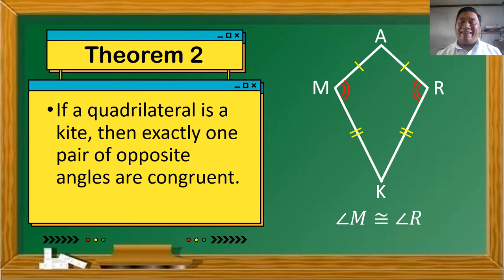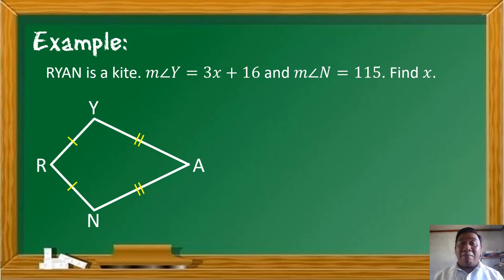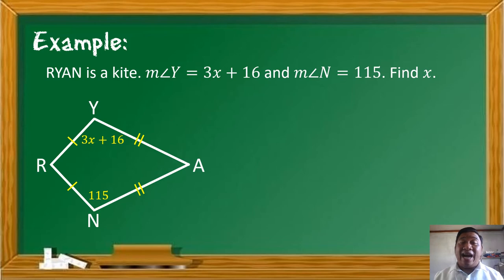Let's have an example. Quadrilateral R-Y-A-N is a kite. The measure of angle Y is equal to 3X plus 16, and the measure of angle N is equal to 115. Find the value of X. The given involves angle Y and angle N, which are opposite angles of our kite — these are the pair of congruent opposite angles stated in our theorem.